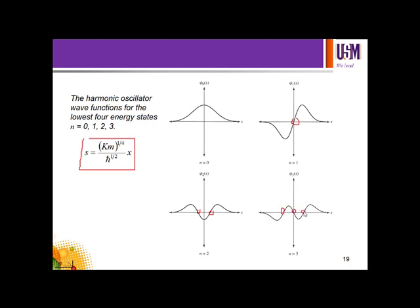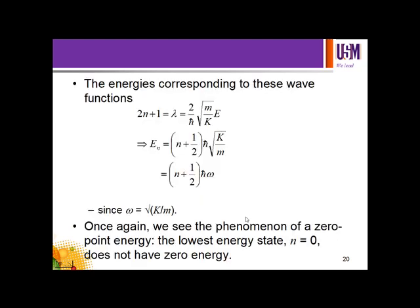The constant Cₙ must be fixed to normalize the wave function. The normalization condition gives Cₙ = (1/π^(1/4)) · 1/√(2ⁿ · n!). As expected, the wave functions are alternately even and odd, since the potential is symmetric about x = 0. The energy corresponding to these wave functions is found from λ = (2/ℏ)√(m/k) · E = 2N + 1, giving Eₙ = (N + ½)ℏ√(k/m).